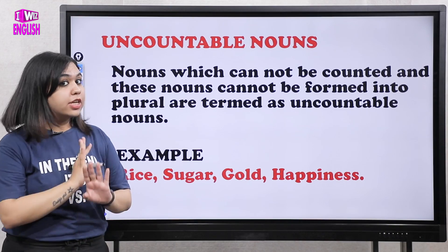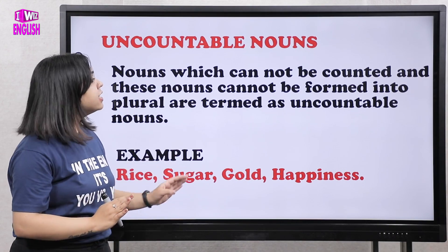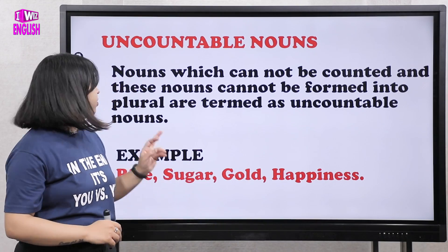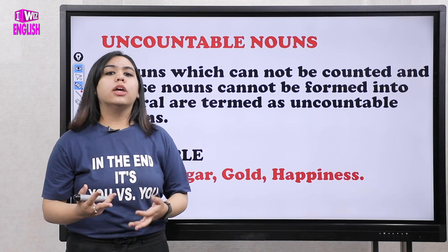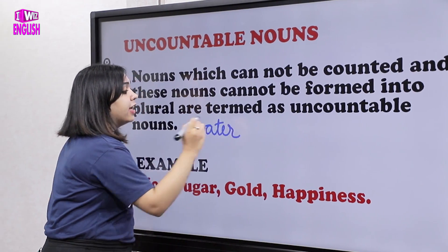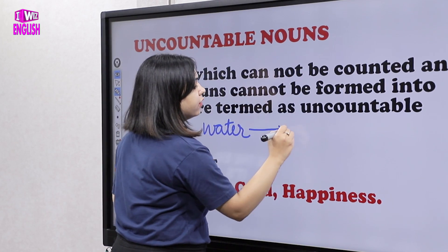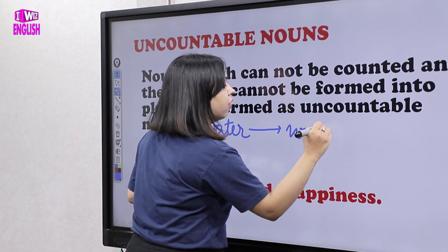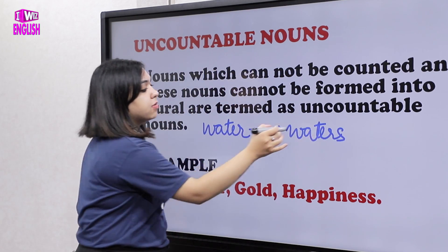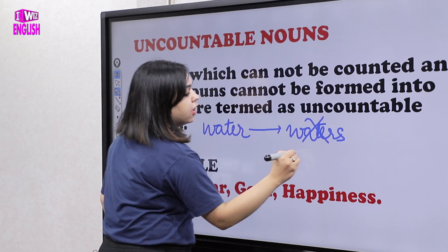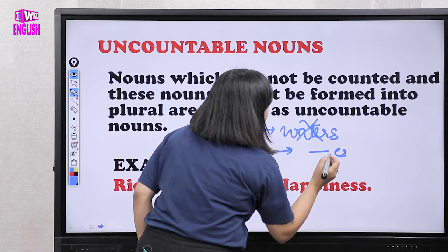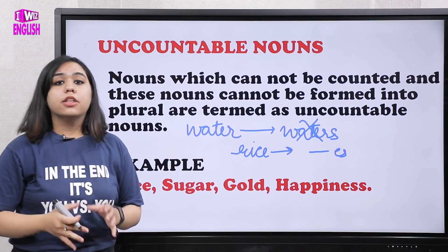Now, uncountable nouns — these are very important. Nouns which cannot be counted also cannot be formed into plural. Think about water: can I say 'waters' as a noun? No, it doesn't make sense. Can I say 'rices'? No. The essence is that nouns you cannot count cannot be converted into plural forms.